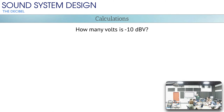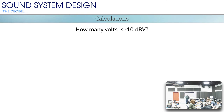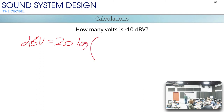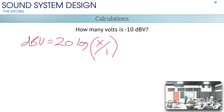Also, zero dBFS — full scale — means all the bits are turned to one: the loudest level that comes out of the computer. Now let's work through the math. To find how many volts is minus 10 dBV: dBV equals 20 times the log of x over 1 volt, since 1 volt is the reference level for dBV. Working backwards: volts equals 1 times 10 to the power of (dBV divided by 20). Plugging in minus 10: 10 to the power of negative 10 over 20 gives 0.316. So minus 10 dBV equals 0.316 volts.